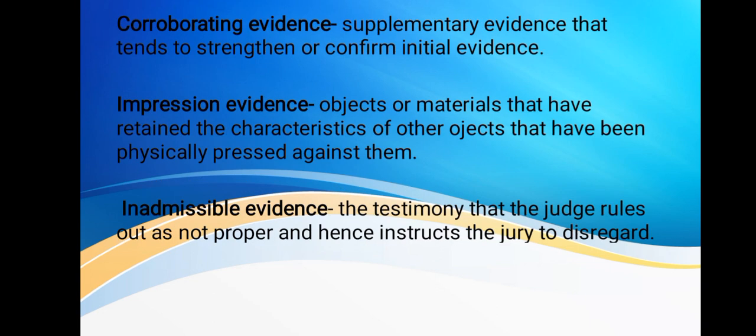We have corroborating evidence — supplementary evidence that tends to strengthen or confirm initial evidence. We also have impression evidence, where objects or materials have retained the characteristics of other objects physically pressed against them. For example, if someone stepped on something at a crime scene, they may have left an impression of their footprint.